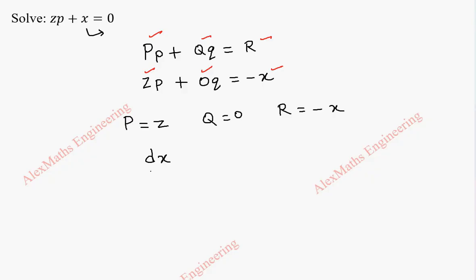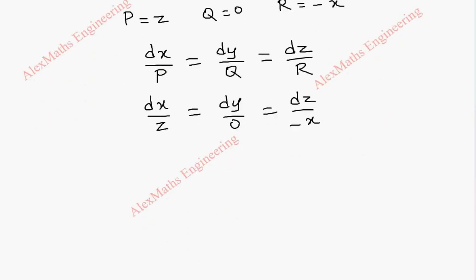So it is enough to solve dx by P equal to dy by Q equal to dz by R to get the solution. So now dx by z, this is dy by 0, and this is dz by minus x.